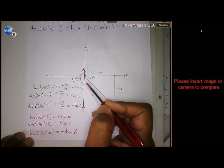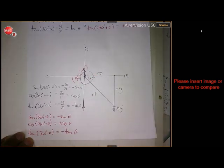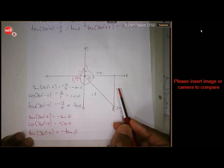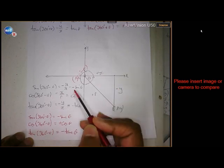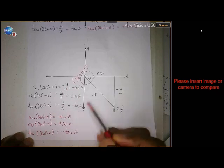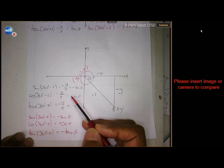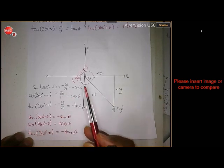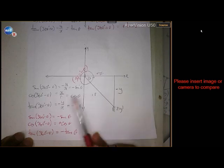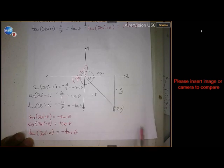For 360 minus theta: one revolution is 360, so this angle must be theta to add up to 360. Sine is y over r, but y is now negative, so sin(360 - θ) = -sin(θ). Cosine is x over r, both positive, so cos(360 - θ) = +cos(θ). Tan is y over x, and y is negative, so tan(360 - θ) = -tan(θ).